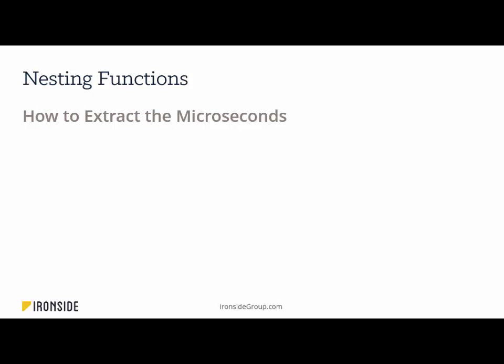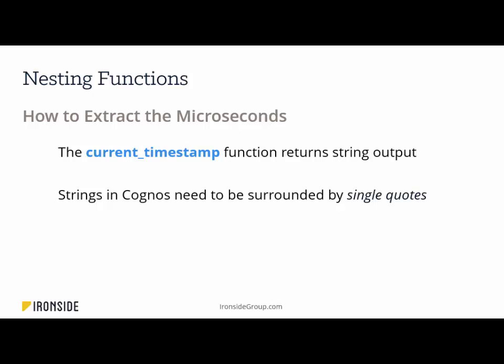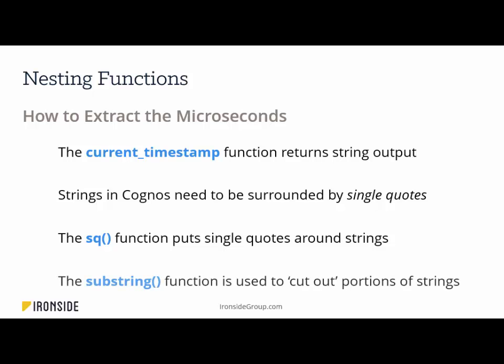In order to get that three-digit microsecond number, we have to do some nesting of the functions. The current timestamp function returns the string output we saw just a second ago. Strings in Cognos need to be surrounded by single quotes, and that can be easily accomplished by nesting the expression inside the SQ function, which puts single quotes around strings. Then we'll nest all of that inside of the substring function, which will be used to cut out the portion of the string that we need.